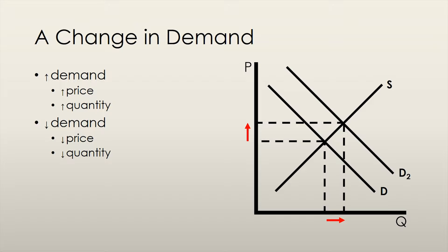Now that more people want this good, buyers will bid up the price. Sellers, seeing this higher price, will produce more. This will continue until the quantity demanded equals quantity supplied.